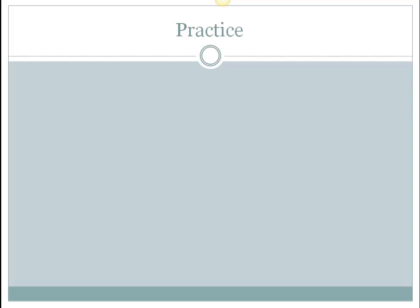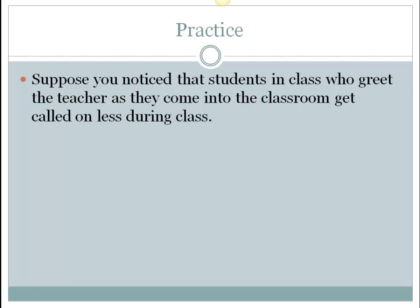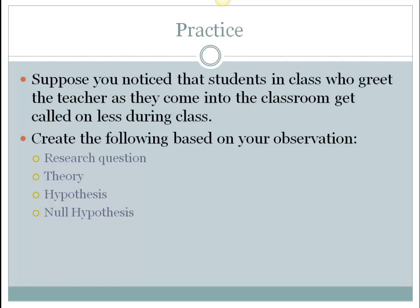Let's take some practice time. You notice that students in class who greet the teacher as they come into the classroom get called on a lot. Based on your observations, create a research question, a theory, a hypothesis, and a null hypothesis. Also identify the independent and dependent variables and operationalize them — put them into a procedure description. We'll talk about this in class tomorrow. Good luck. Rewind if you need to, and remember to supplement this video with your notes and textbook.